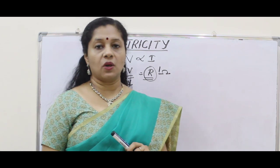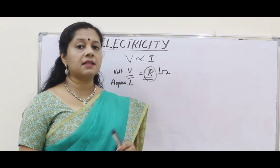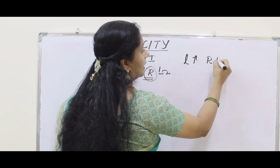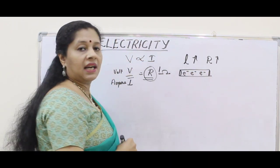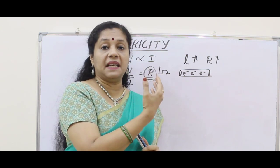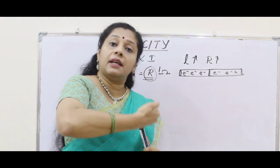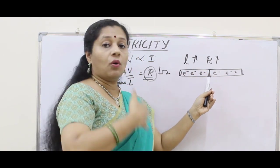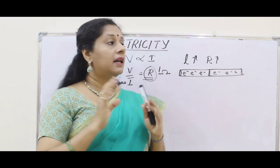Now we will see what are the factors on which the resistance of a conductor depends. There are actually 4 factors. The first one is the length of the conductor. When the length of the conductor increases, the resistance also increases. Electrons are experiencing opposition as they travel through a wire, and if they have to travel double the length, the opposition also increases. So naturally the resistance will be high — length and resistance are directly proportional.